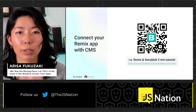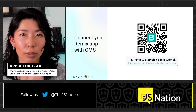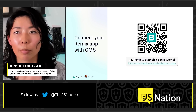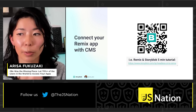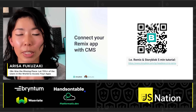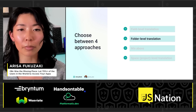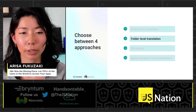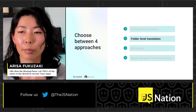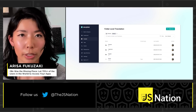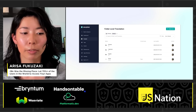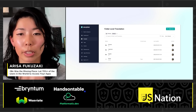The first step is connecting your Remix application with a content management system of your choice. In this talk I'll show the example with Storyblock, though I won't cover how to create the connection — instead I'll offer a five-minute tutorial after my talk. With Storyblock you can choose between four approaches. I'm going to cover one called folder level translation, where we divide content into different folders to have different localized content.